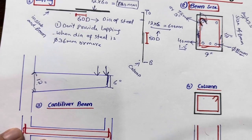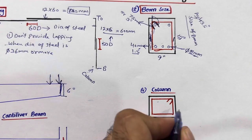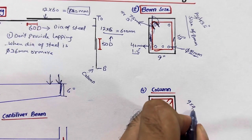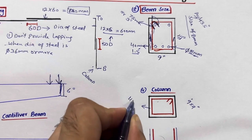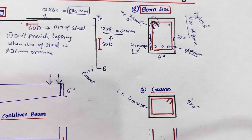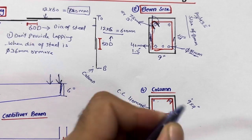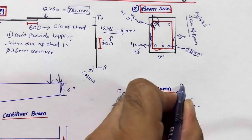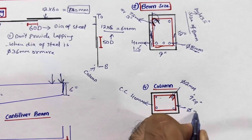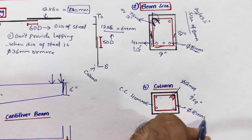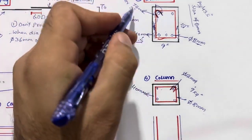The fourth point is the column. The minimum column size should not be less than 9 inches by 9 inches, with a minimum of four steel bars. The concrete cover should be 40mm. The minimum bar diameter should not be less than 12mm. Stirrup diameter, as discussed, should be 8mm with a spacing of 6 inches. Hooks should be 75mm at 135 degrees, same as the beam.